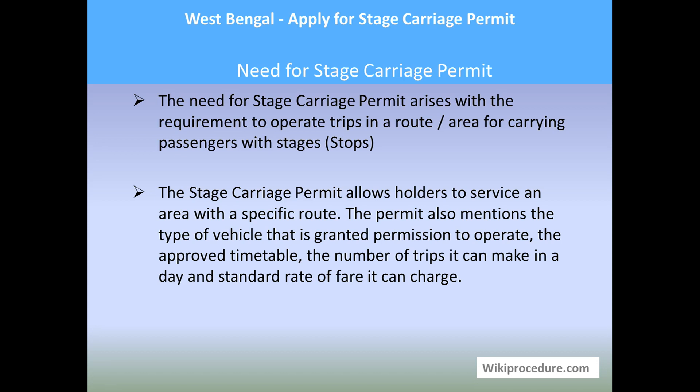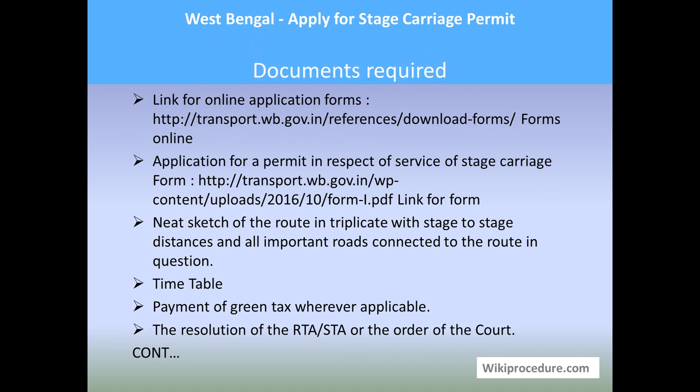The stage carriage permit also allows the permit holder to service an area with a specific route. The permit also mentions the type of vehicle granted permission to operate — meaning what kind of seat arrangements there are, how many passengers it can seat — the approved timetable, the number of trips it can make in a day, and the standard rate of fare it can charge.